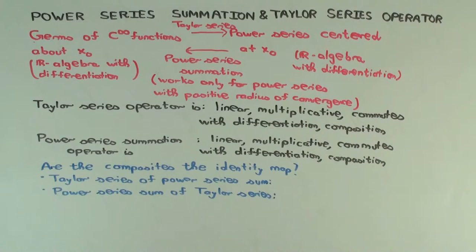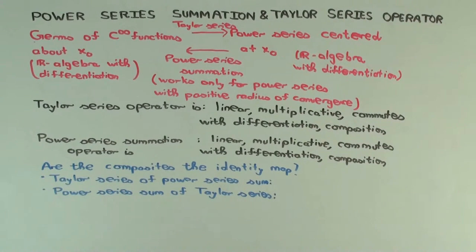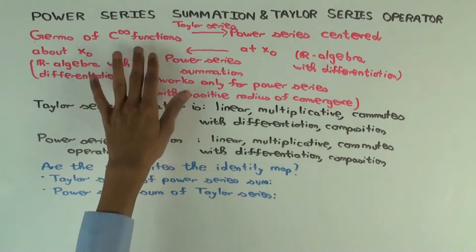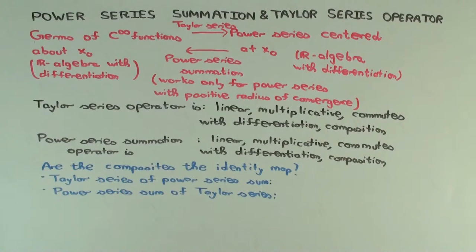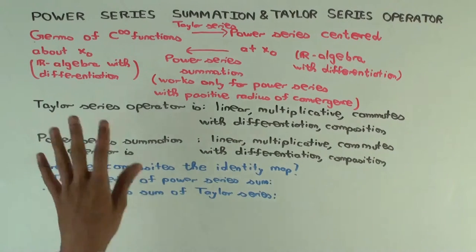Having the same germ is an equivalence relation, and we have a separate video proving exactly that. You can basically add germs of functions: if you add functions and replace them by others with the same germ, the addition remains the same. So you can do addition, scalar multiplication, and multiplication for germs of C∞ functions. That kind of structure is called an R-algebra.